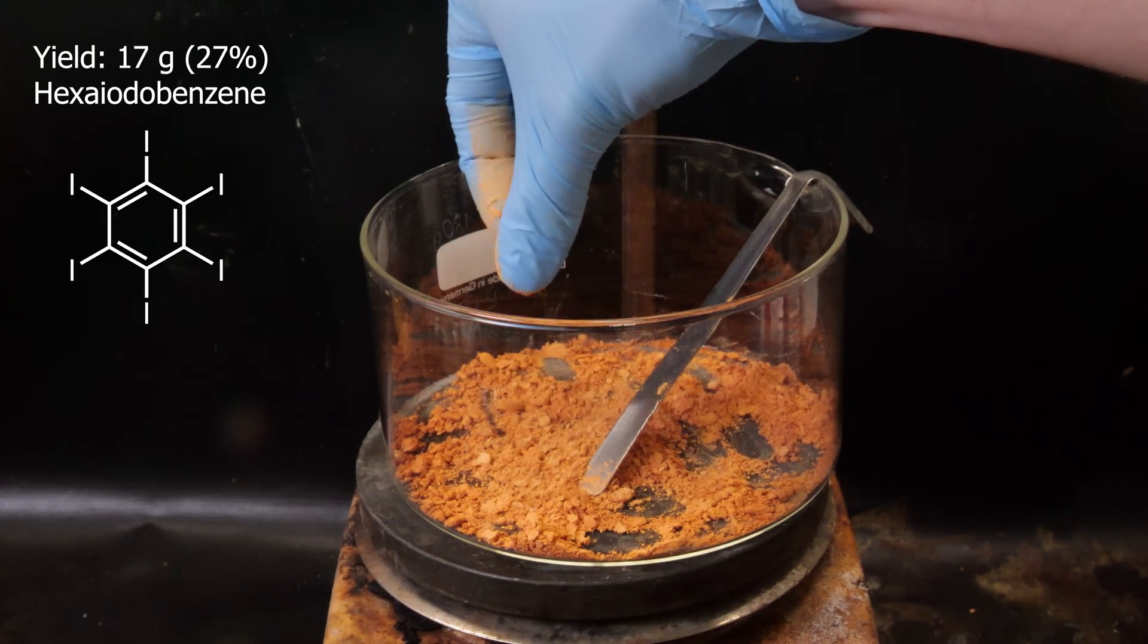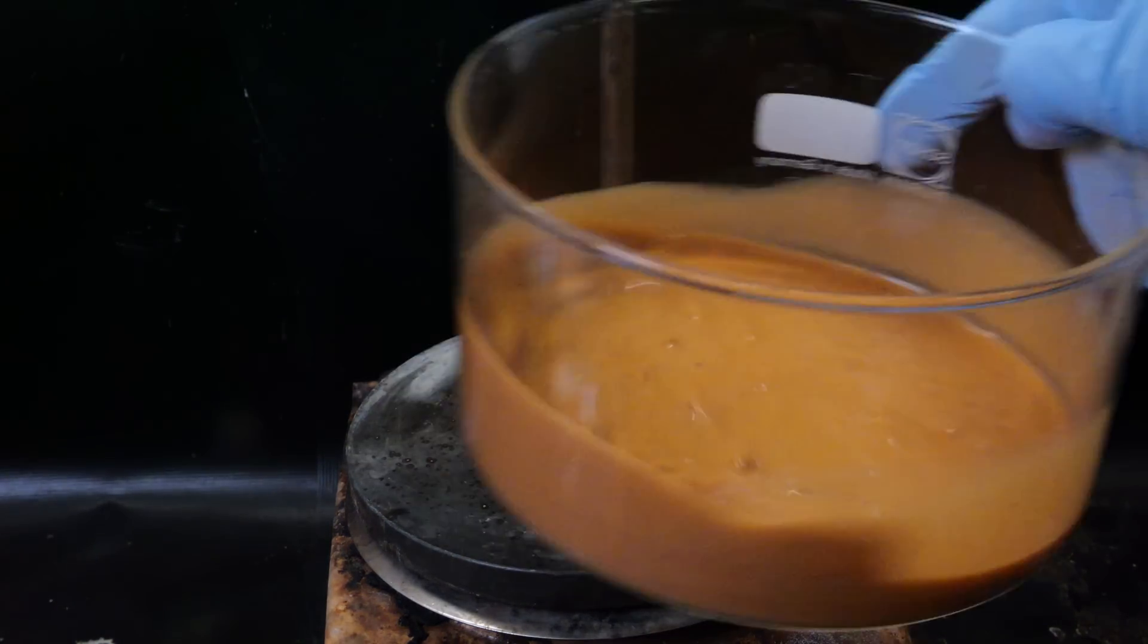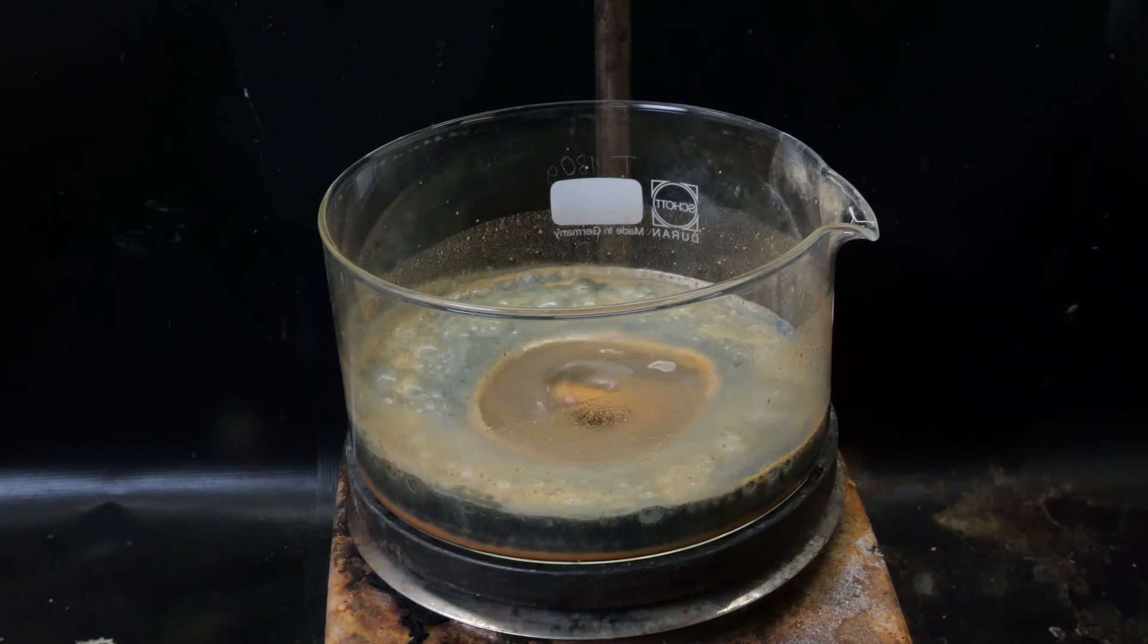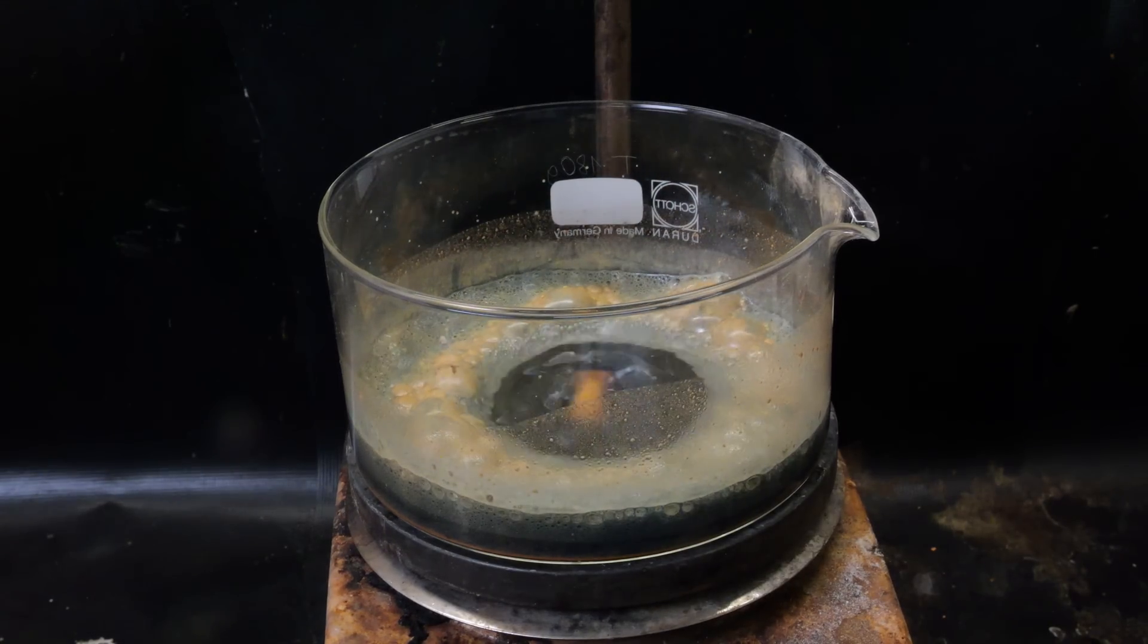While any partially iodinated impurities would be destroyed by it. So I cover the material in concentrated sulfuric acid and then slowly add hydrogen peroxide. This creates the piranha solution that reacts immediately with any organic compounds.